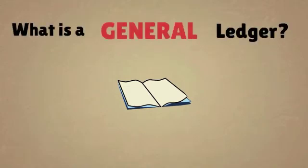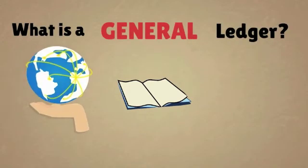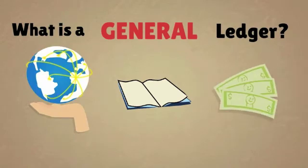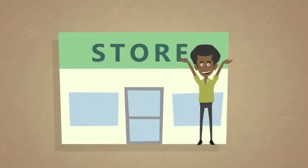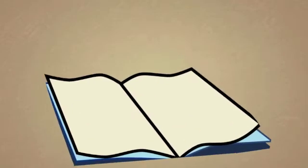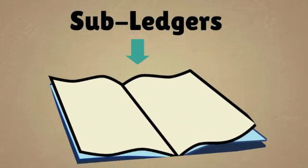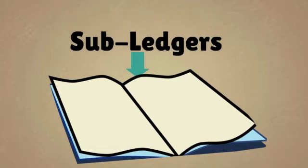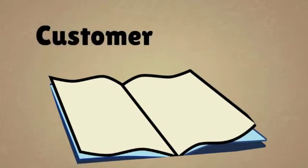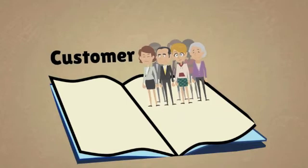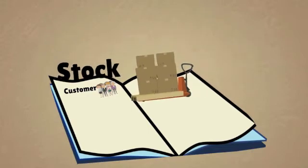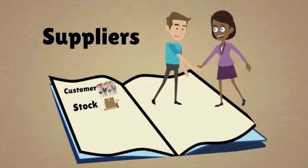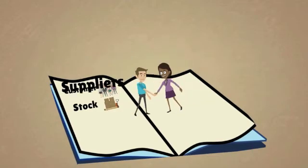So, what is a general ledger? A general ledger is an overview of all financial figures for your company. Let's imagine that you own a store. The overview of your finances will be kept in your general ledger. That general ledger is made of a series of subledgers. Each subledger corresponds to a different financial part of your business. When a customer makes a purchase in your store, that information goes into the customer subledger. When you buy more stock, that goes into the stock subledger. When you're invoiced by suppliers, that information goes into the supplier subledger.